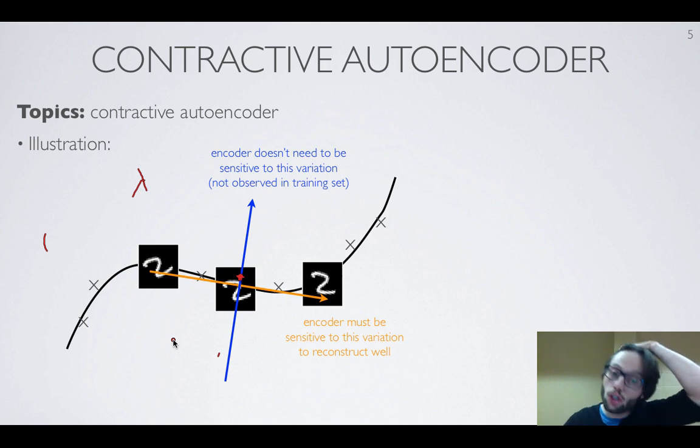And so, again, we have, we should have hidden units that learn something about the lower-dimensional manifold behind our data, so learns about the structure, the meaningful structure that characterizes our training distribution.